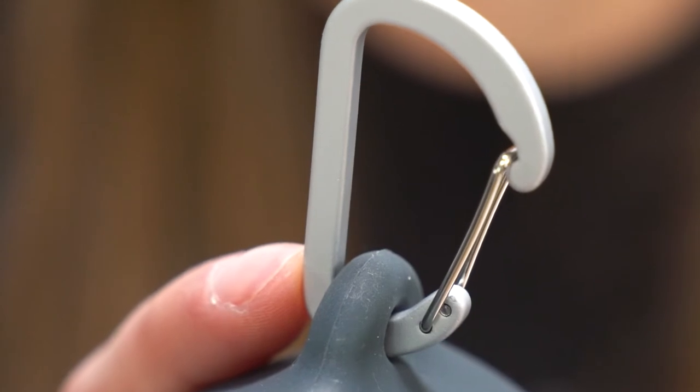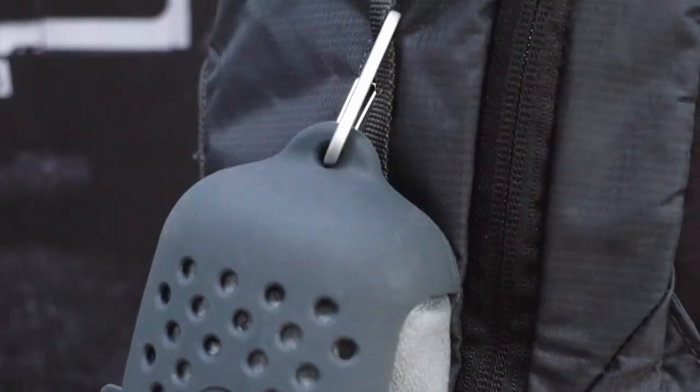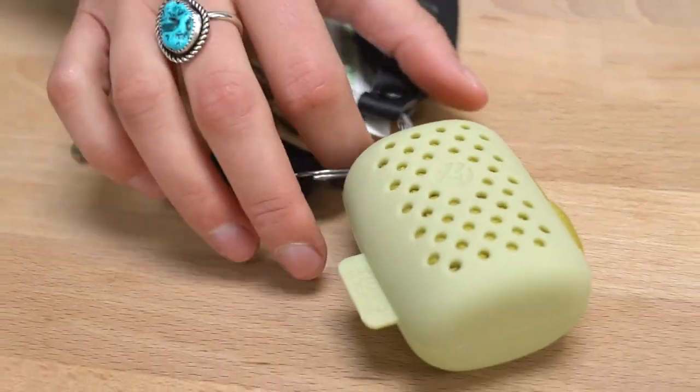A carabiner or keyring allows you to clip it to your bag and take it with you anywhere. And that's the Matador NanoDry Trek Towel. Thanks for watching!